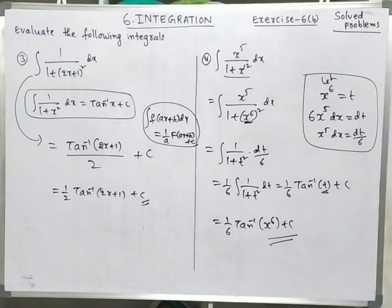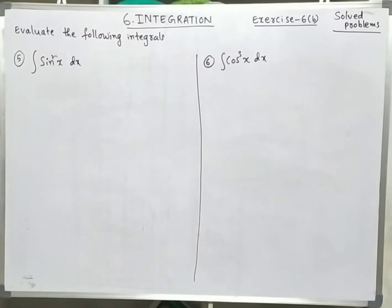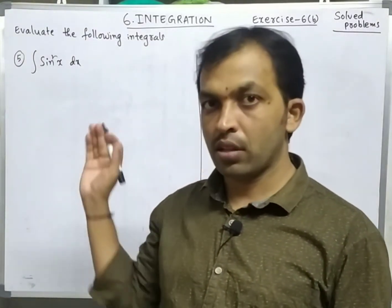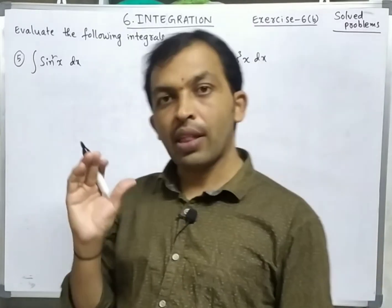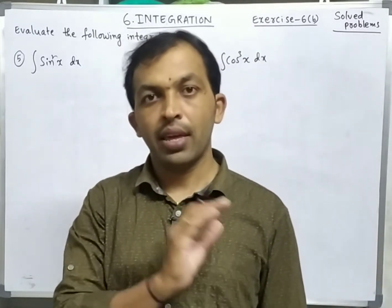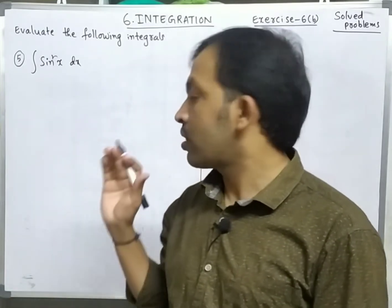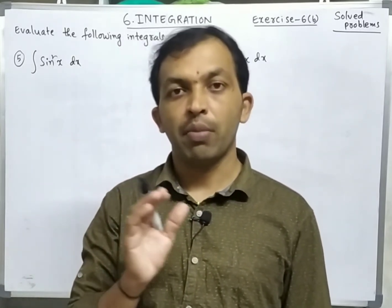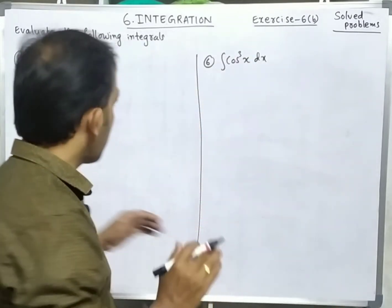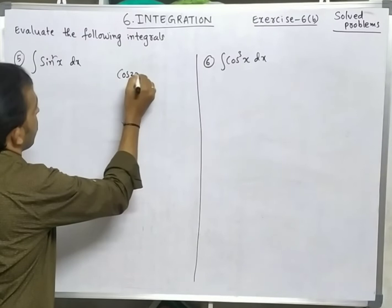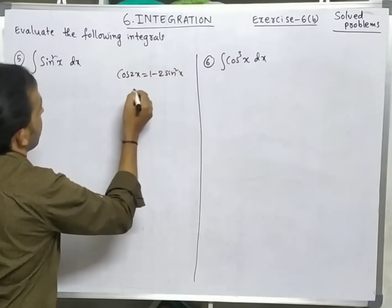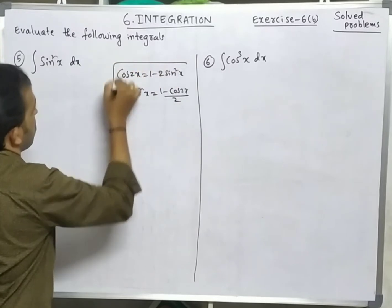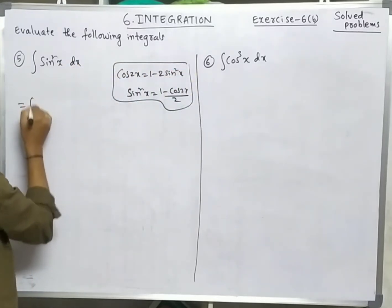But we have some more interesting problems. These are somewhat different and important problems we are getting for two-mark questions. Integration of sin²x dx — do not write it as -cos x whole square. We will solve it using trigonometric formulas. We have cos 2x = 1 - 2sin²x, so sin²x = (1 - cos 2x)/2.